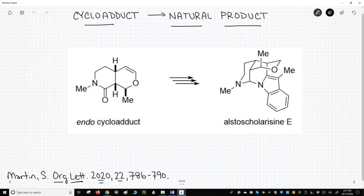The Martin group ultimately converted the endo cycloadduct into this molecule, alstoscholarine E, a natural product of interest for treatment of neurodegenerative conditions like Alzheimer's disease. Alstoscholarine E is a very complex molecule, yet we can see the two rings of our cycloadduct buried in the complex structure of the natural product.